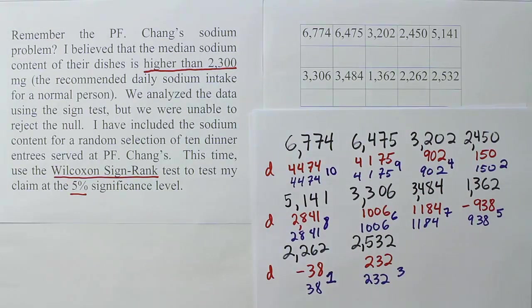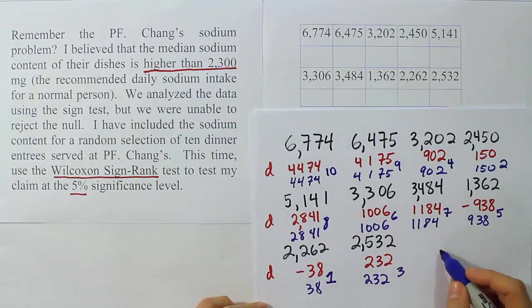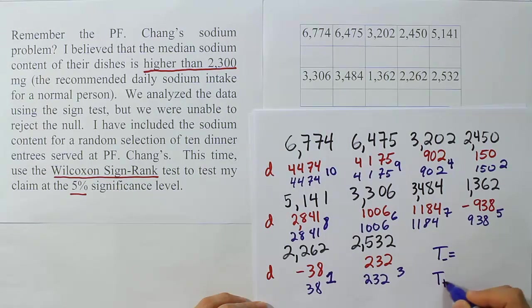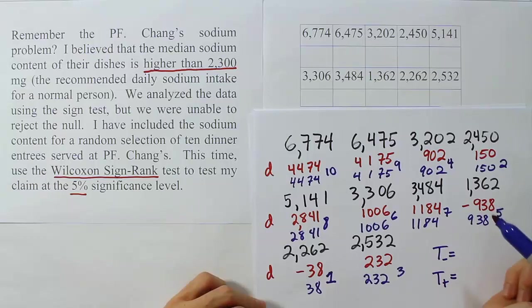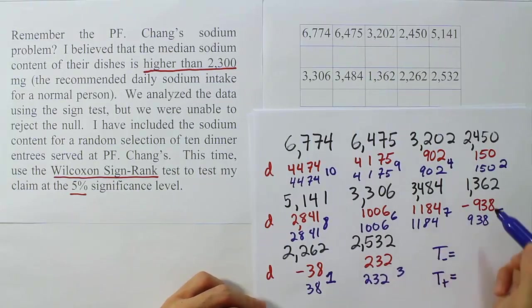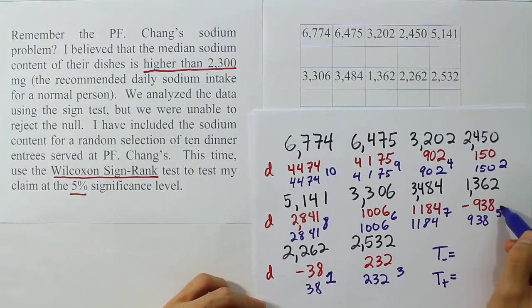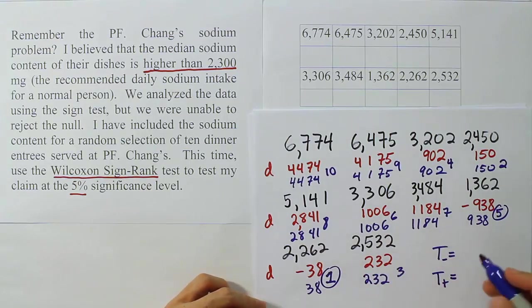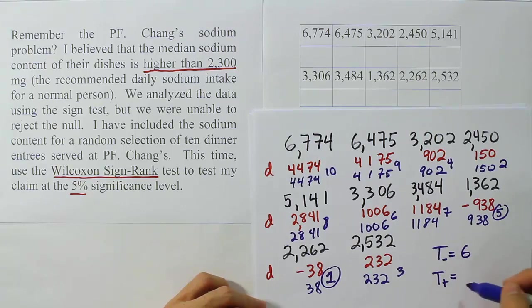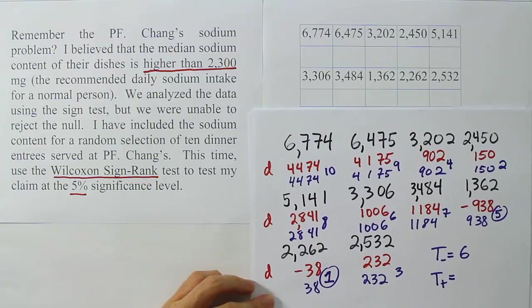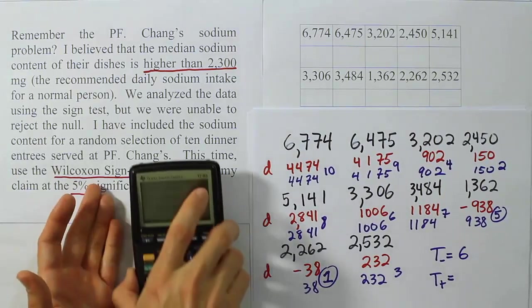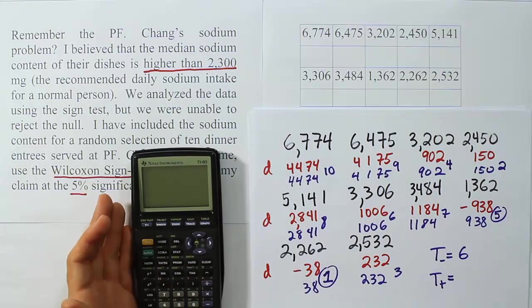Now, last thing we have to do is come up with the rank total. So we need to have the T negative, the negative rank sum, and the T positive, the positive rank sum. So T negative, how many negative values do we have? Looks like we only had two negative values when we did the subtraction. Only two times was it negative. And the rank totals for those are 5 and 1, which gives you 6.